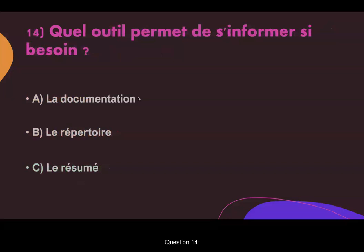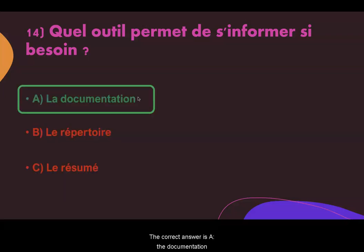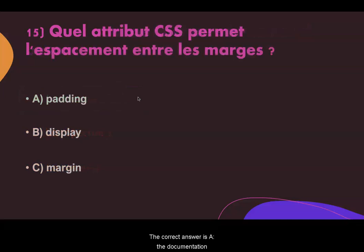Question fourteen. Which tool allows you to get information if needed? Answer A: the documentation. Answer B: the directory. Answer C: the summary. The correct answer is A, the documentation.